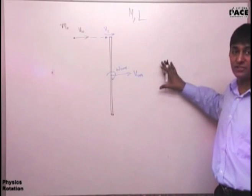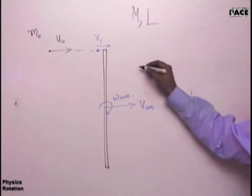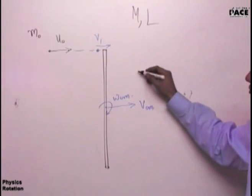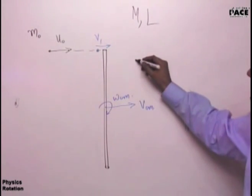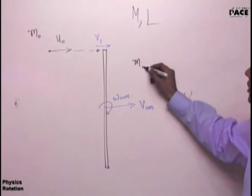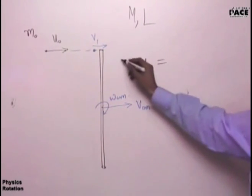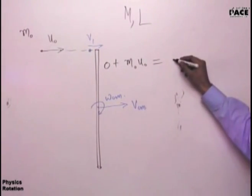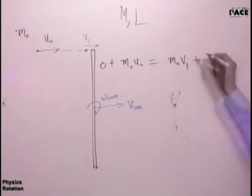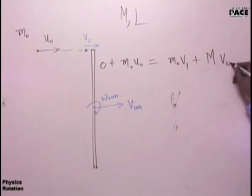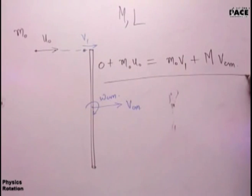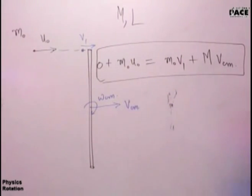All of you don't pay attention. Linear momentum conservation of the system. All of you please tell me. Linear momentum conservation is M not U not equal to - the rod initial momentum was 0 - equals M not V1 plus M into Vcm. This is linear momentum conservation of the whole system. External force acting on the whole system is 0. Therefore, we can conserve.